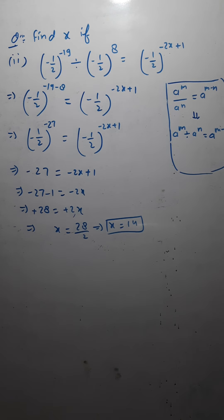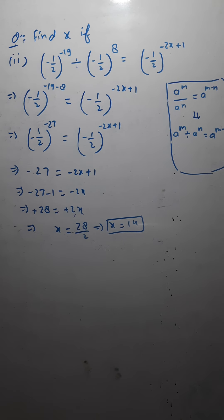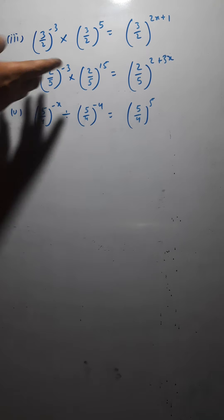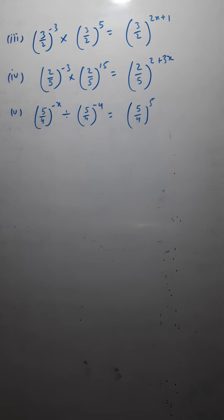So the value of x is 14. Note it down. Similar questions are given as the third and fourth — both are similar to the previous question. We have already done this sort of question: (3/2) raised to the power minus 3 multiplied by (3/2) raised to the power 5 equals (3/2) raised to the power 2x plus 1.